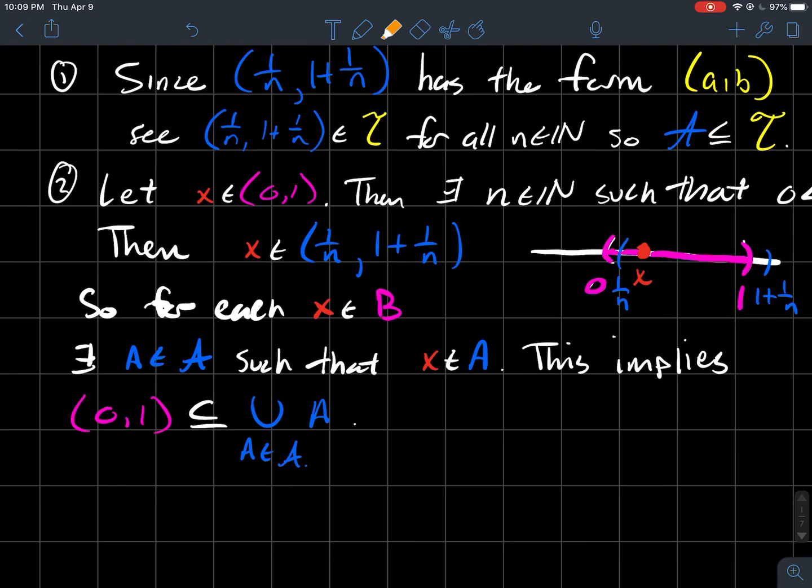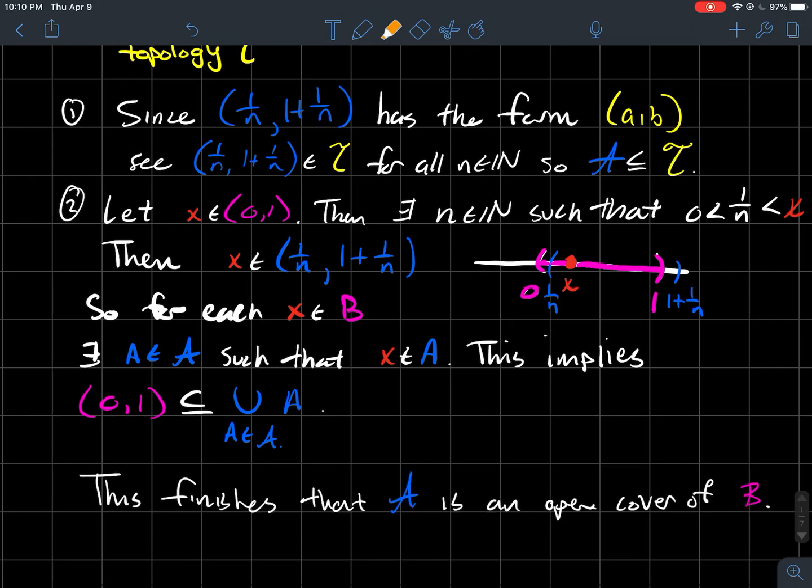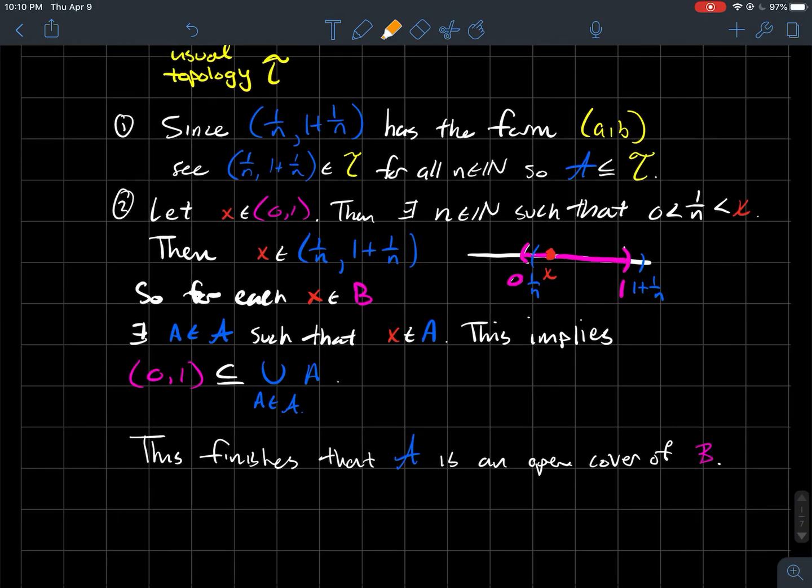what you could do is say that the whole pink interval from zero to one should be in the union of a whole bunch of these sets that look like one over N. If you could do that for each X in A, you can have one of these blue sets. Take the union of them all and you ought to contain the whole pink interval. So that finishes that fancy A is an open cover of B.